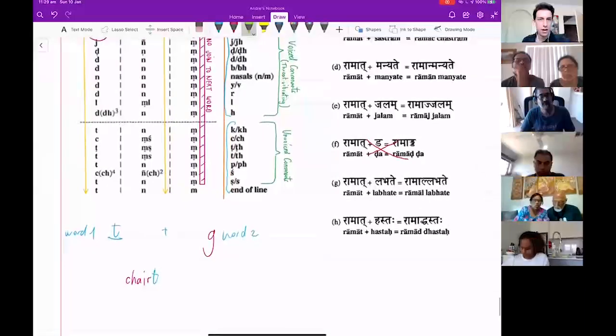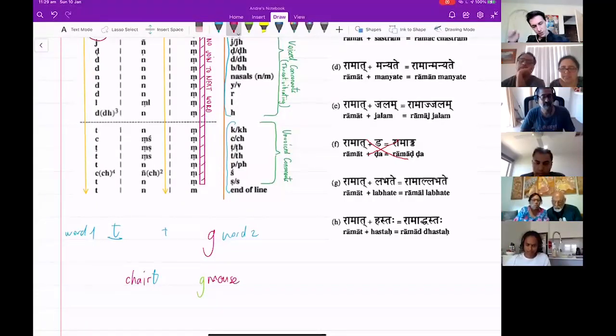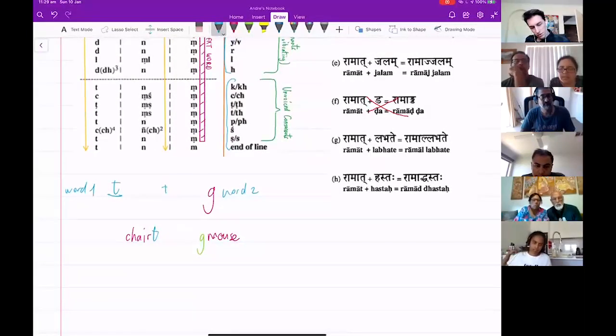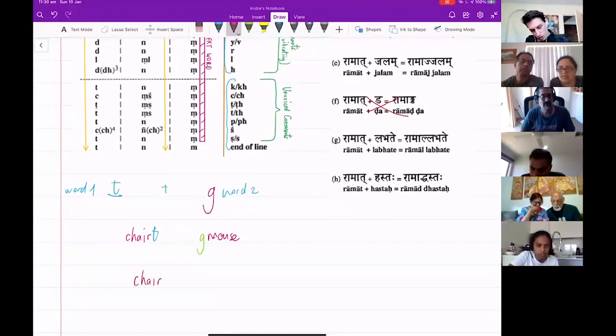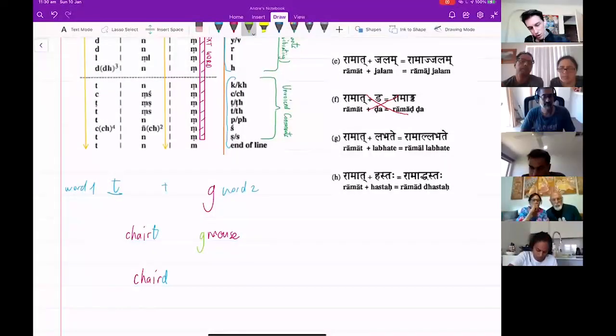Suppose it's not mouse, it's 'gmaus' - the animal, the rodent. What's going to happen to this 'chairt'? It's going to say 'chaird', why D? Because we have the D there. 'Chaird' and then you just continue, you don't touch the second word at all. 'Chaird gmaus'.